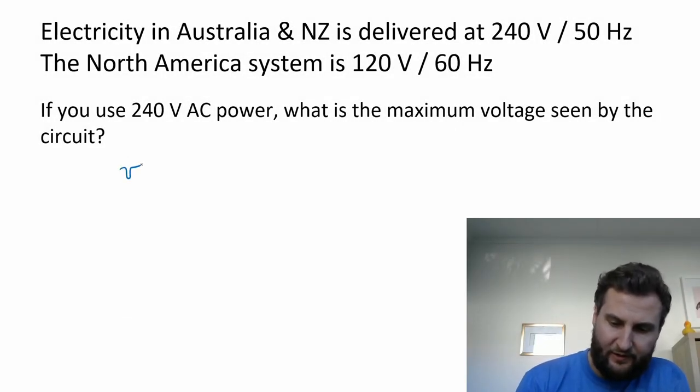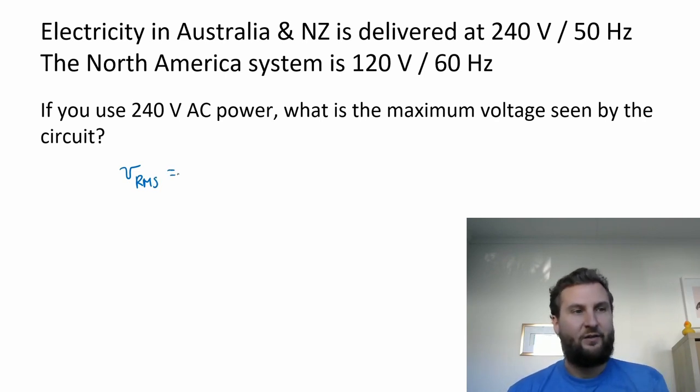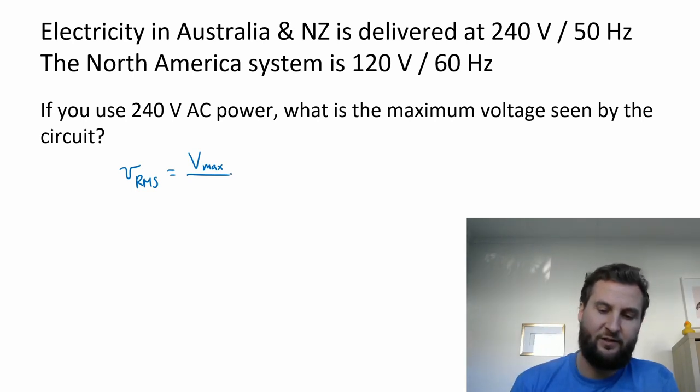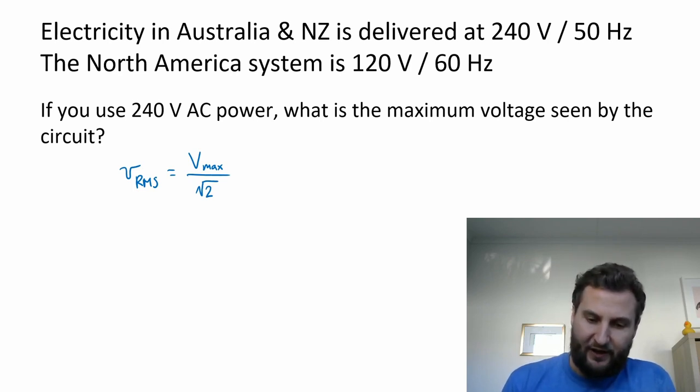So we're going to call this new value V_RMS for the root mean square voltage, and this is just going to be our max voltage. So that was the peak of that oscillating function, and then we're going to divide it by root 2. So you can verify that that's the same equation that we just found.